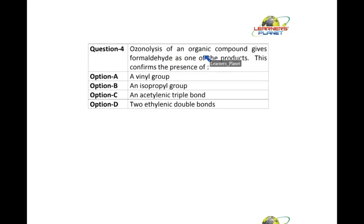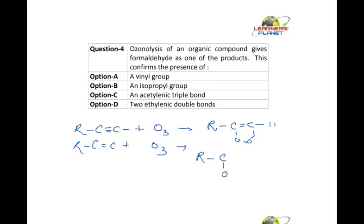Ozonolysis of an organic compound gives formaldehyde as one of the products. This confirms the presence of. What is obtained is formaldehyde. Ozonolysis is acetylene or ethylene. Here it can be R, and they are subjected to ozonolysis or treated with O3. What you get is R-C double bond C with oxygen. It can be R or H, anything. What is one of the product? It is formaldehyde.